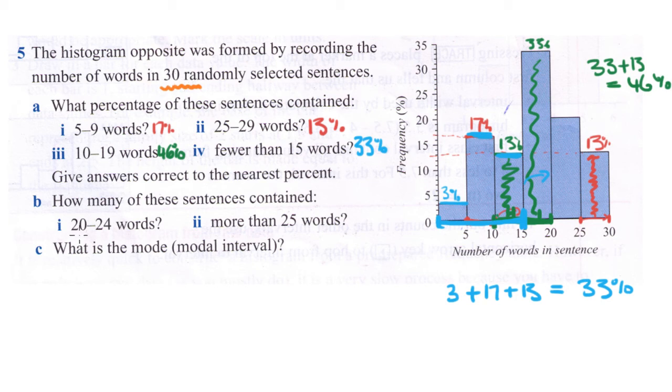We're finding 20 to 24 words, so that's this bar here between 20 up to but not including 25. We want to know the height of this bar which we read off our scale as 20%. Now we need to know what 20% of these 30 sentences is.